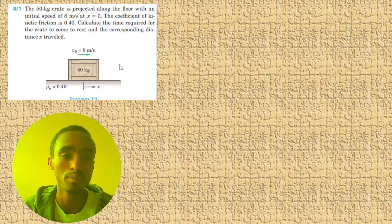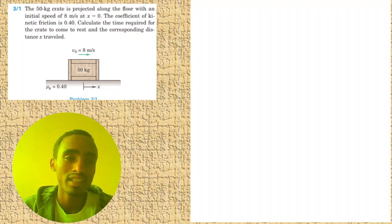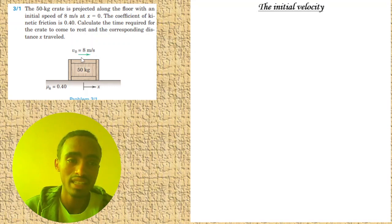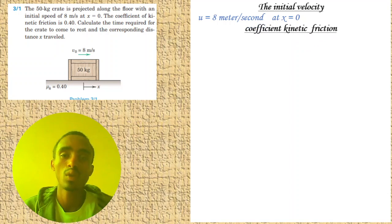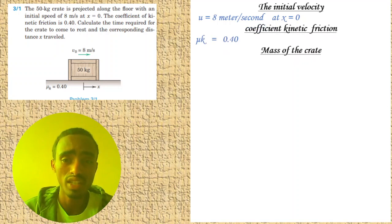The mass of the crate is given as 15 kilograms and the final velocity is zero because it comes to rest.